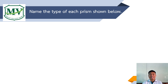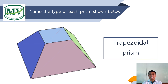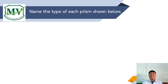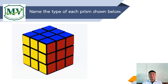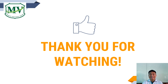Let's have the next figure. What type of prism is this? Correct, this is a trapezoidal prism. We're down to our last figure. What type of prism is this? Correct, this is a cube. I hope you had fun. See you again next time, thank you for watching!